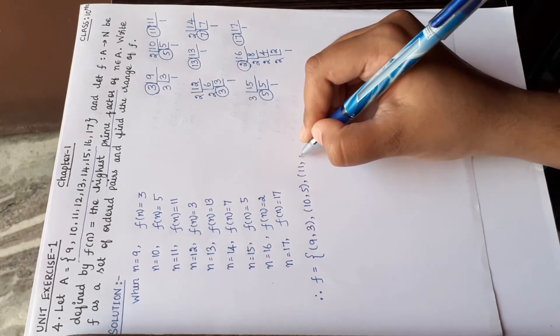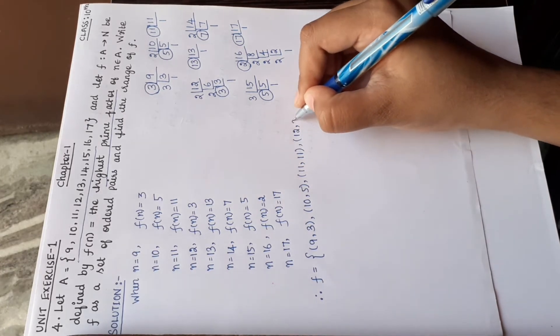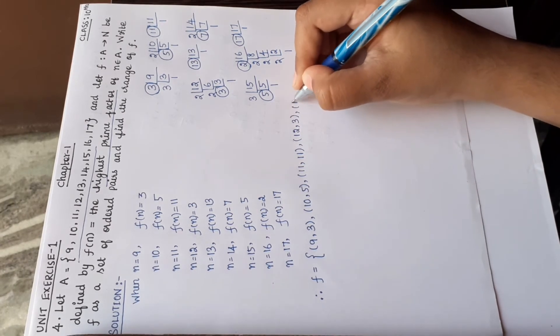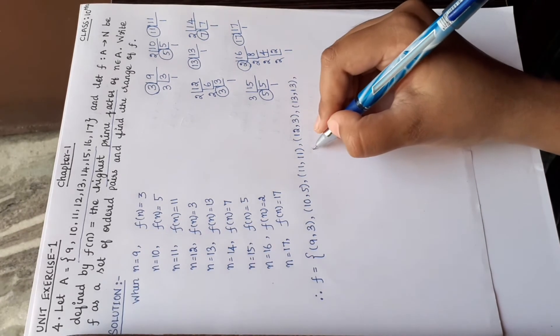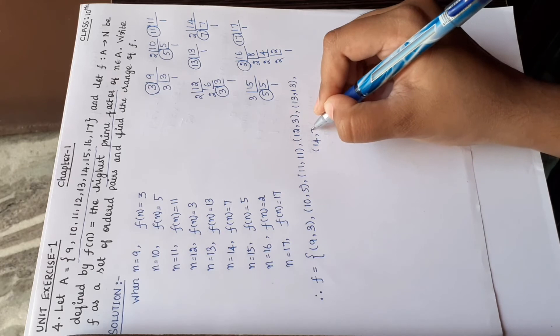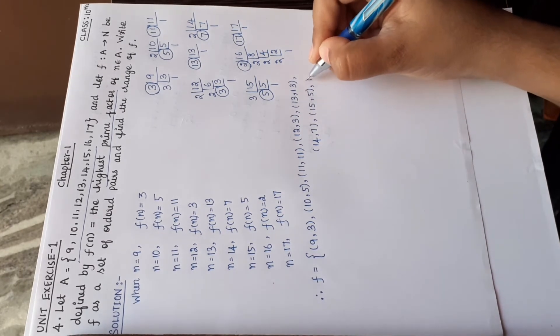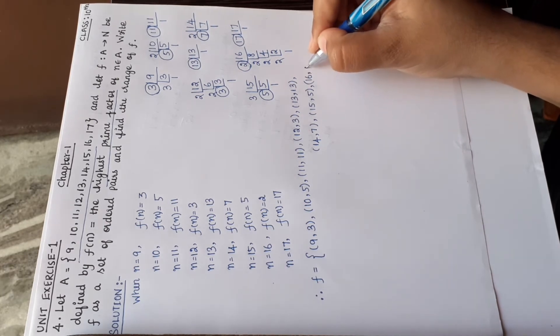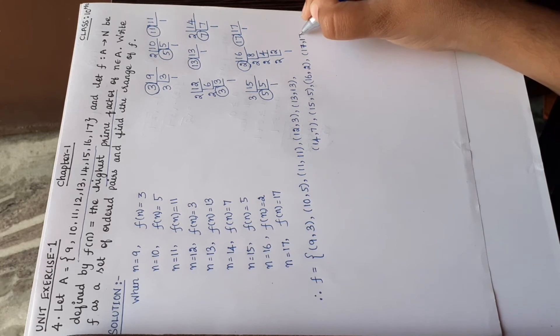So listing the ordered pairs: 9 comma 3, then 10 comma 5, 11 comma 11, 12 comma 3, 13 comma 13, 14 comma 7, 15 comma 5, 16 comma 2, and 17 comma 17. So this is the set of ordered pairs.